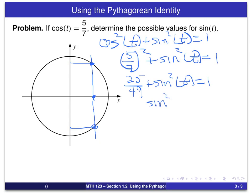Or, sine squared of t equals 1, which I'm going to write as 49 divided by 49 to make it easier to deal with the fractions, minus 25 over 49.